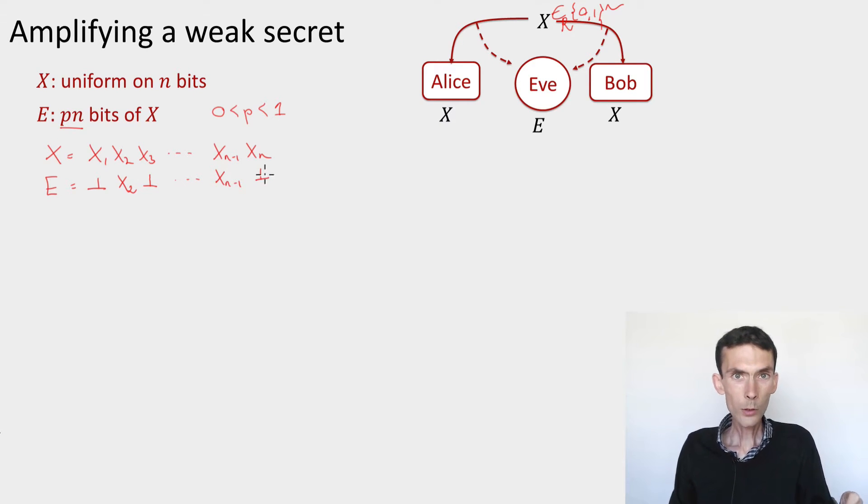Alice and Bob know that the eavesdropper has stored pn bits, but don't know which bits it has stored. And their goal is to come up with shorter strings, r_a and r_b, that are identical and are as close as possible to uniformly distributed from the point of view of the eavesdropper. So how do we do this?